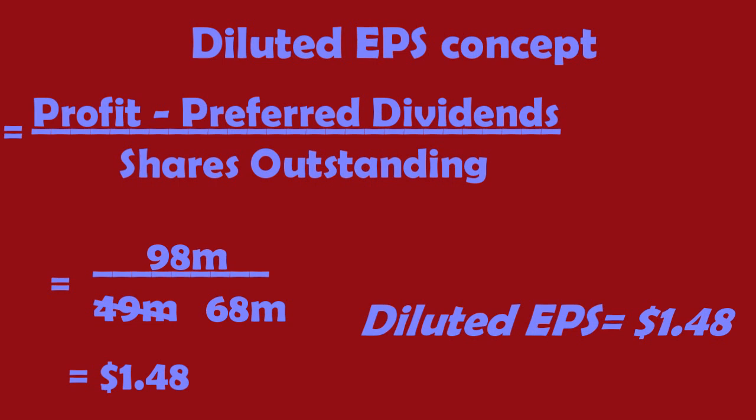Instead of having earnings of $2.00 per share, the more accurate figure in this case would be $1.48 per share. This is because there are more shares, meaning the denominator is higher, so when you divide it, it equates to $1.48. The main thing is that diluted EPS shows the scenario of the maximum shares that can be in place.